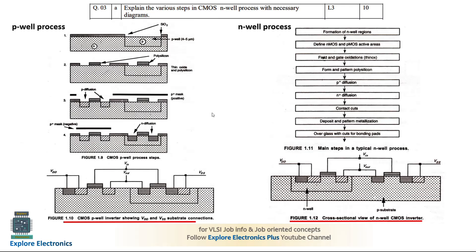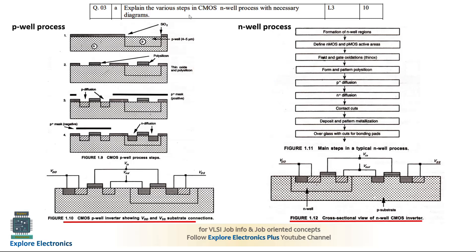Now let us start the next question solutions. The question is from Module 2: explain various steps in CMOS N-well process with necessary diagrams. They have asked to write the N-well process with diagrams, but here the P-well process is shown. You need to convert this P-well process into N-well process in your answer.